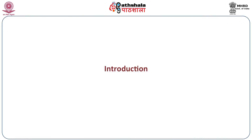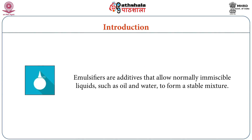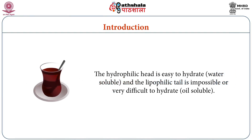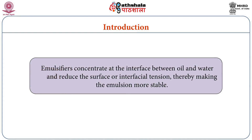Emulsifiers can be used to make a stable emulsion between immiscible liquids like fat or oil and water. In this module we are going to discuss different applications of emulsifiers in different food systems. Emulsifiers are additives that allow normally immiscible liquids such as oil and water to form a stable mixture. They contain both hydrophilic and lipophilic parts. The hydrophilic head is water-soluble and the lipophilic tail is oil-soluble. The emulsifier concentrates at the interface between oil and water, reducing the surface or interfacial tension, thereby making the emulsion more stable.